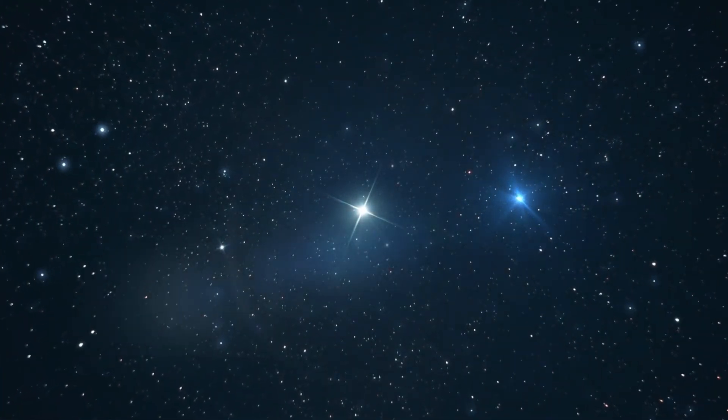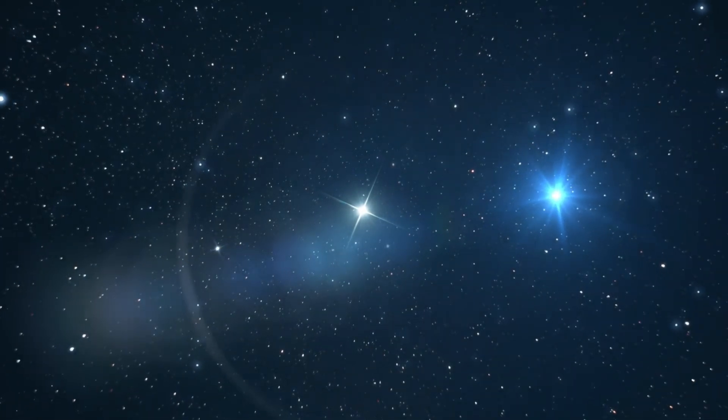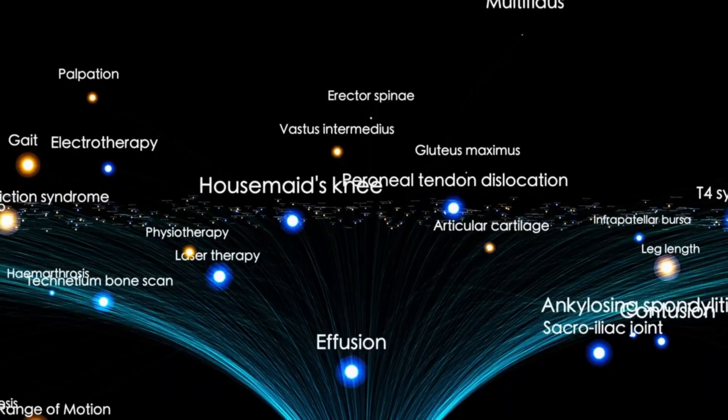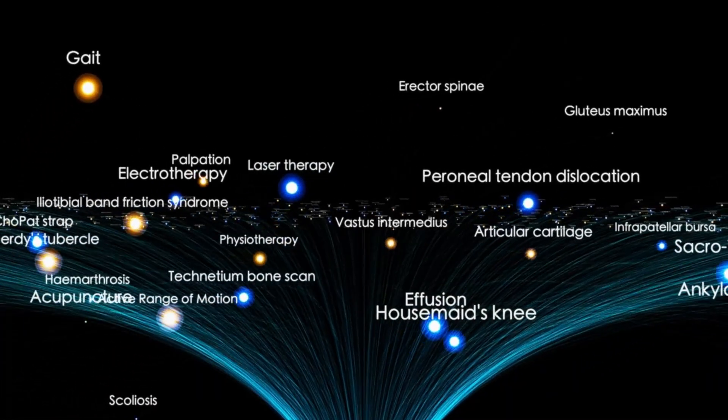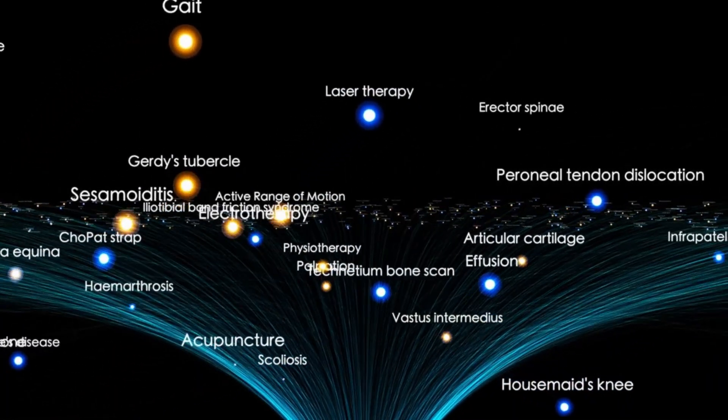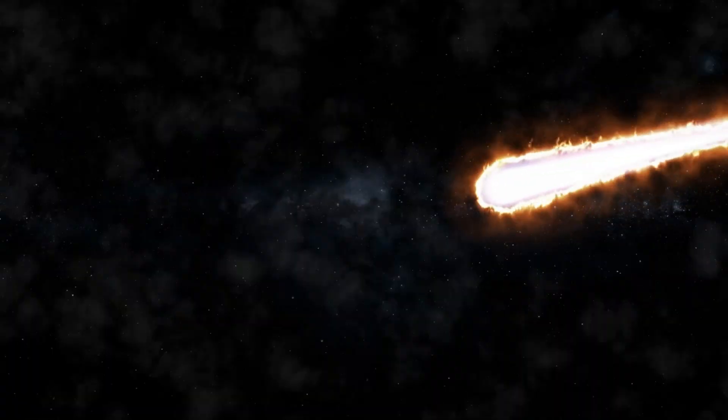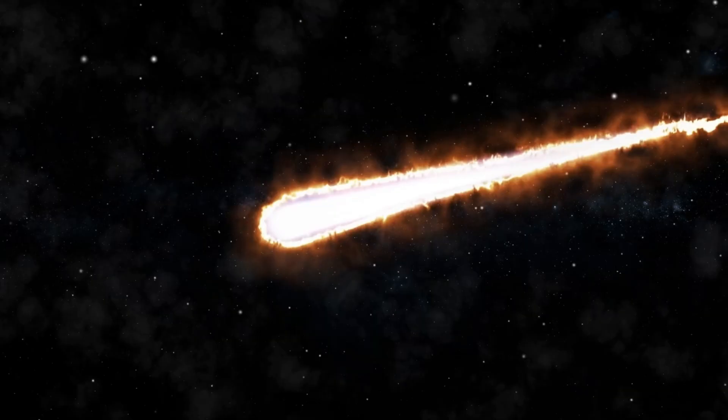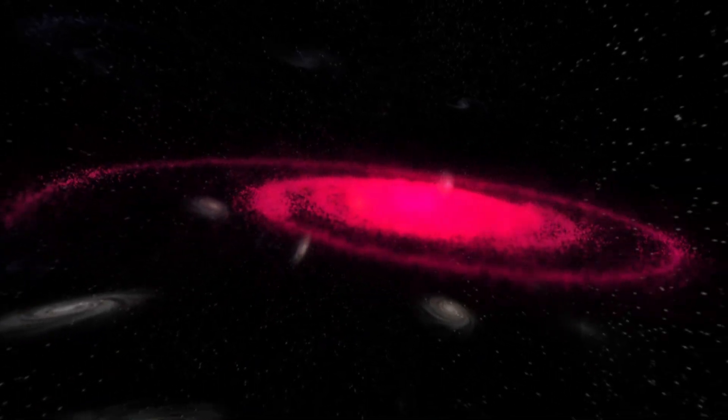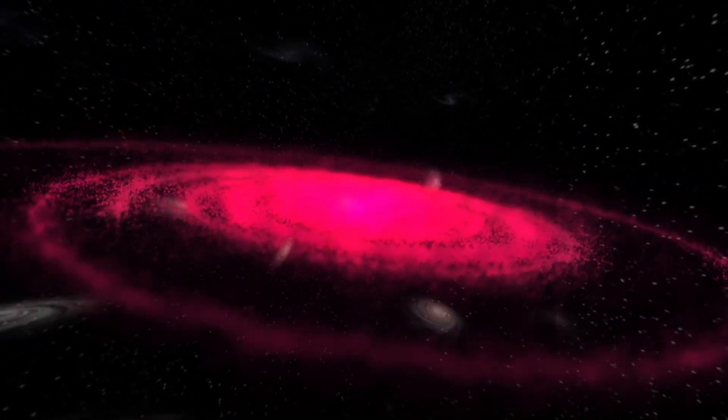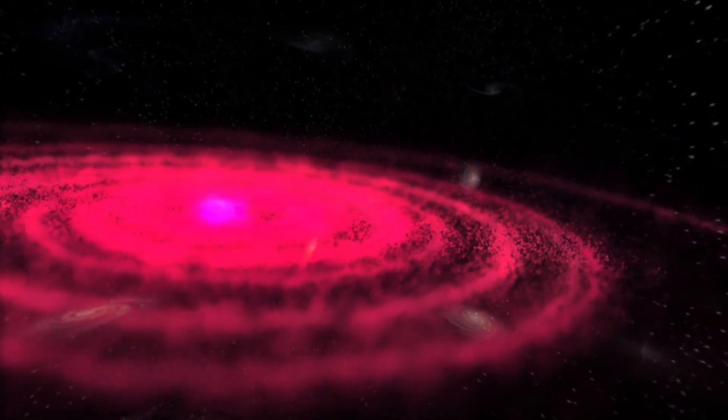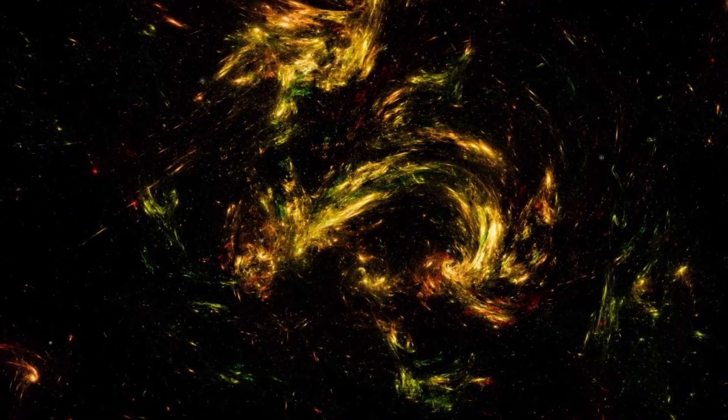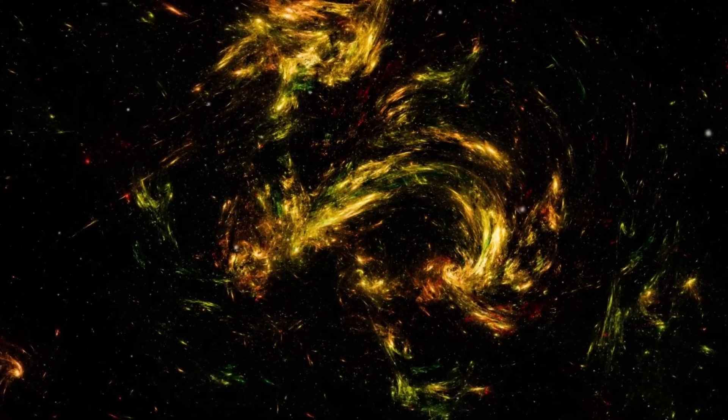Dark matter, the elusive substance that doesn't emit or absorb light but exerts gravitational influence, is thought to make up a large portion of the universe's mass. If the Milky Way lacks the expected amount of dark matter, it could mean our galaxy is a cosmic oddball, or that our entire understanding of dark matter is flawed. Alternatively, the methods used to estimate galactic mass or interpret Gaia's data might need refinement. Estimating galactic mass is notoriously tricky, and even a small error in the data or analysis could lead to large discrepancies.